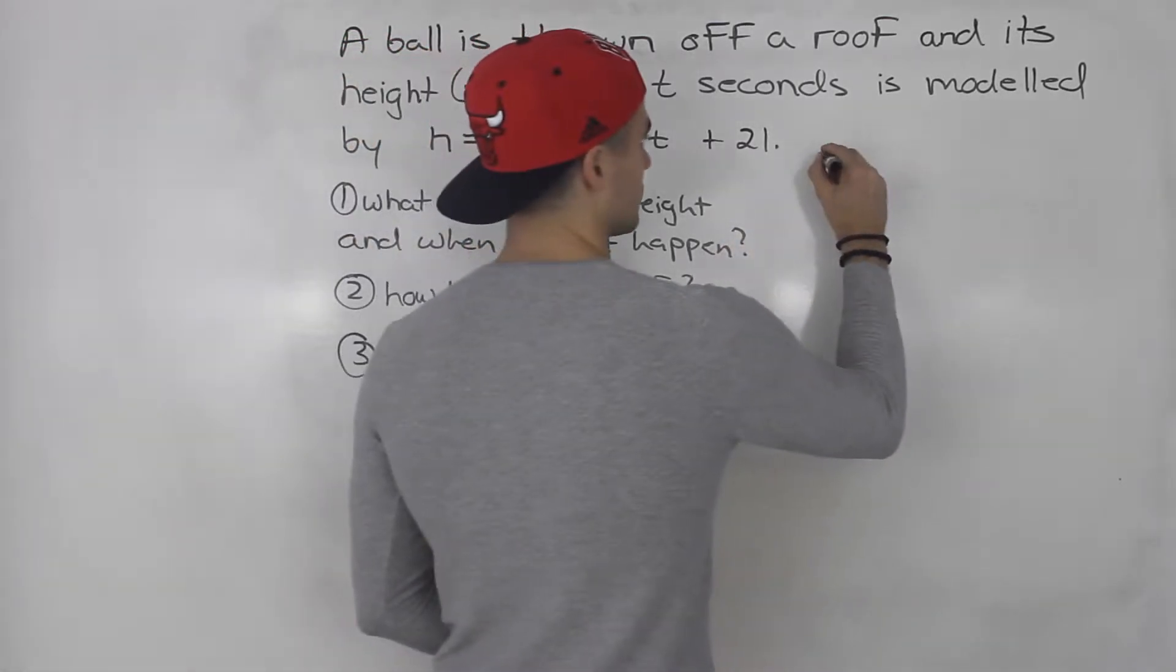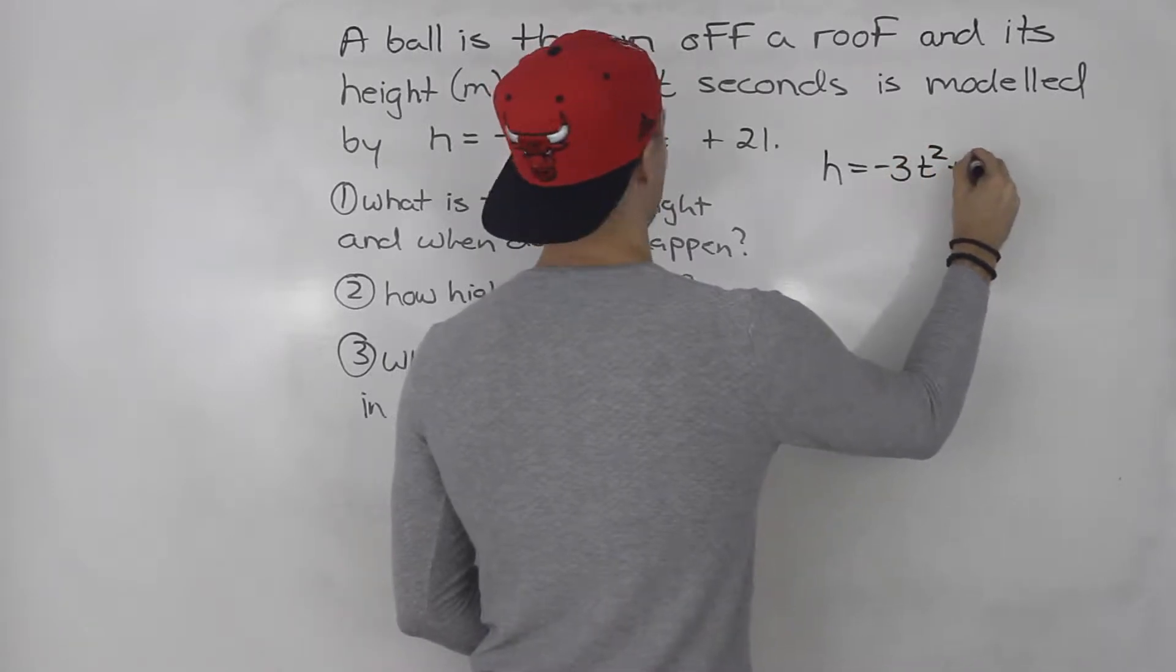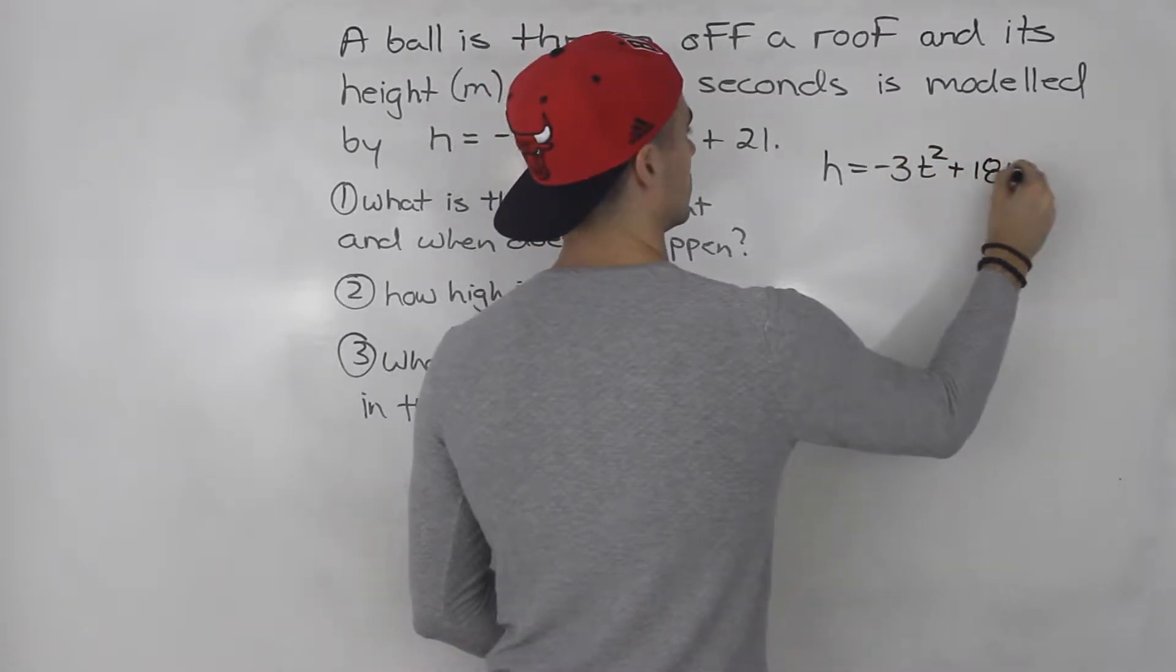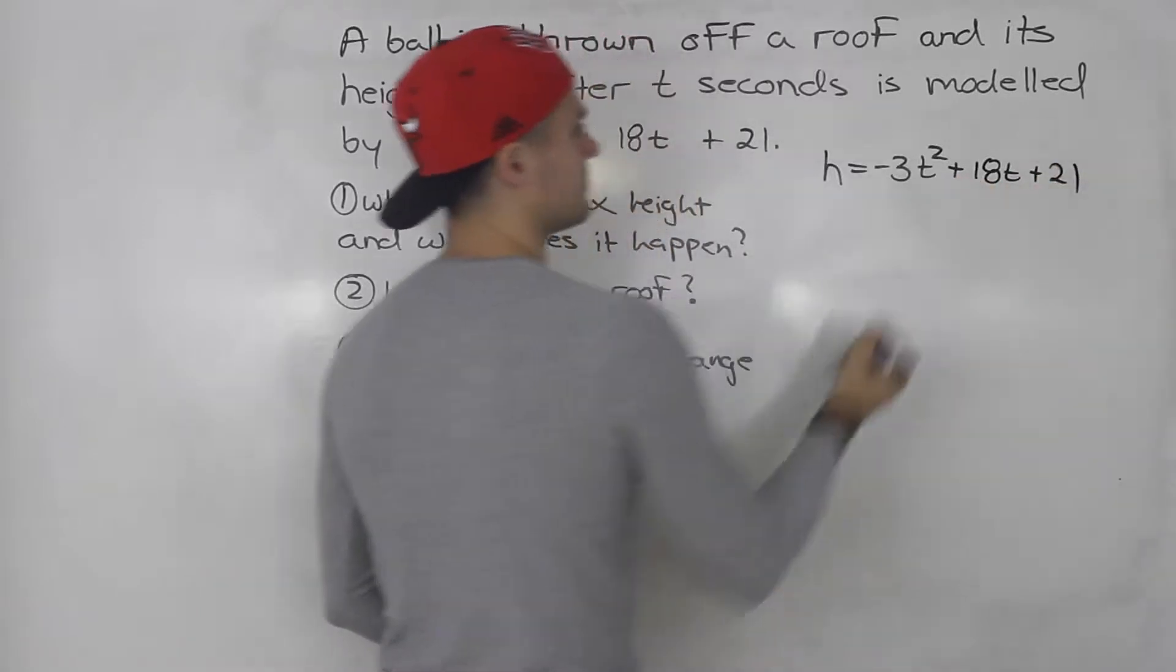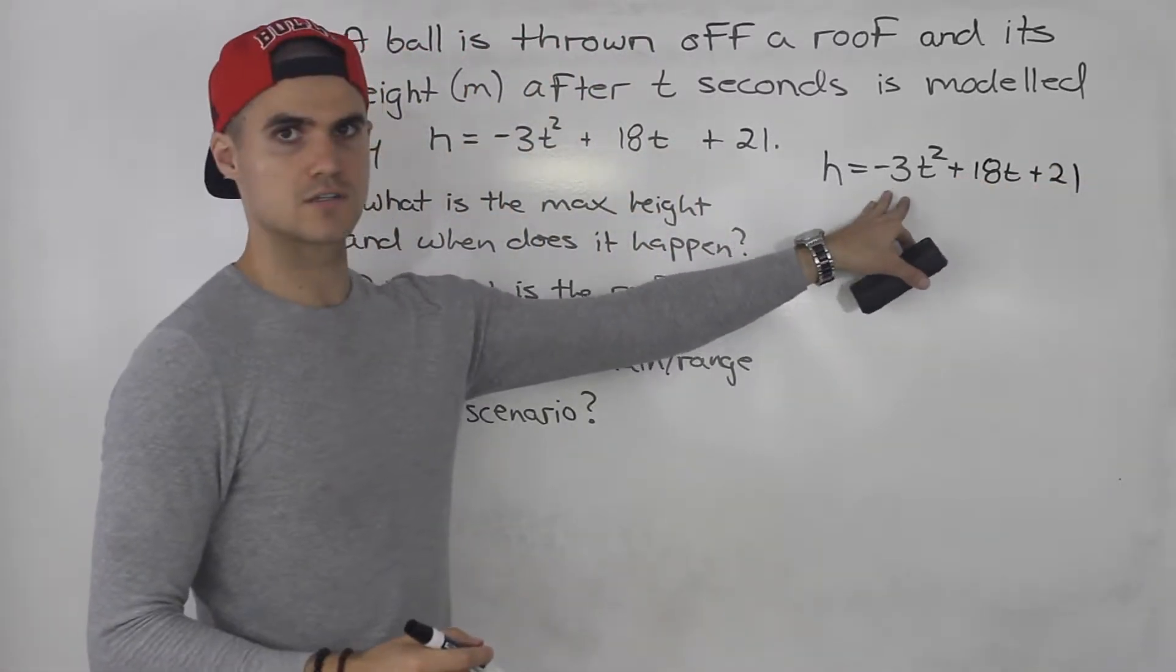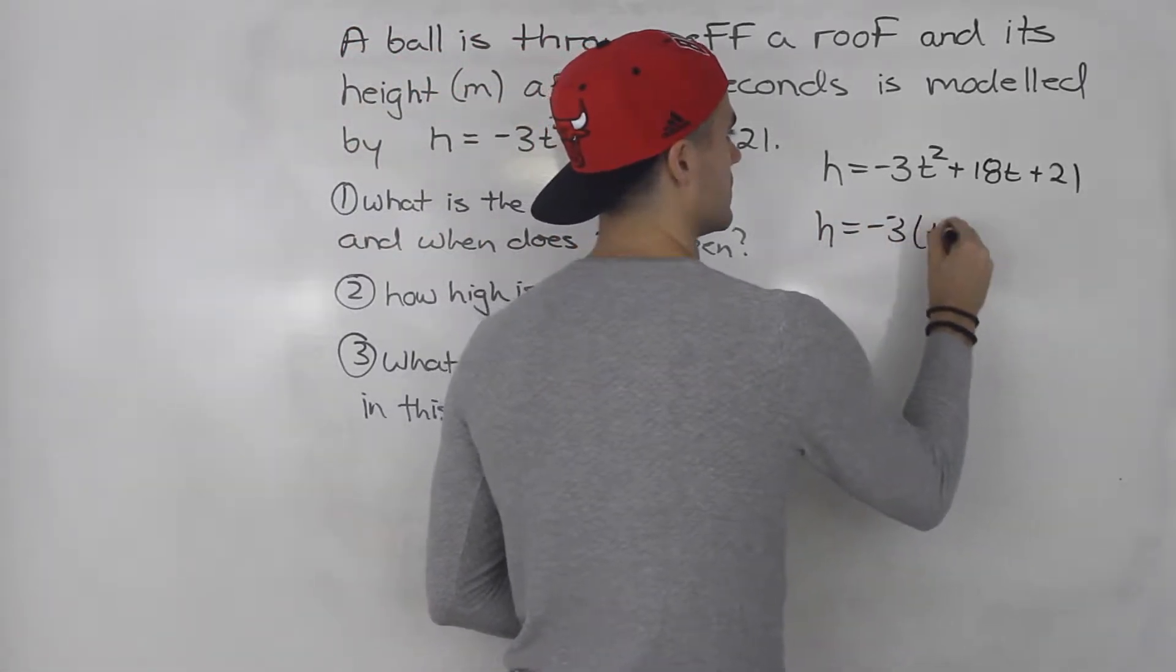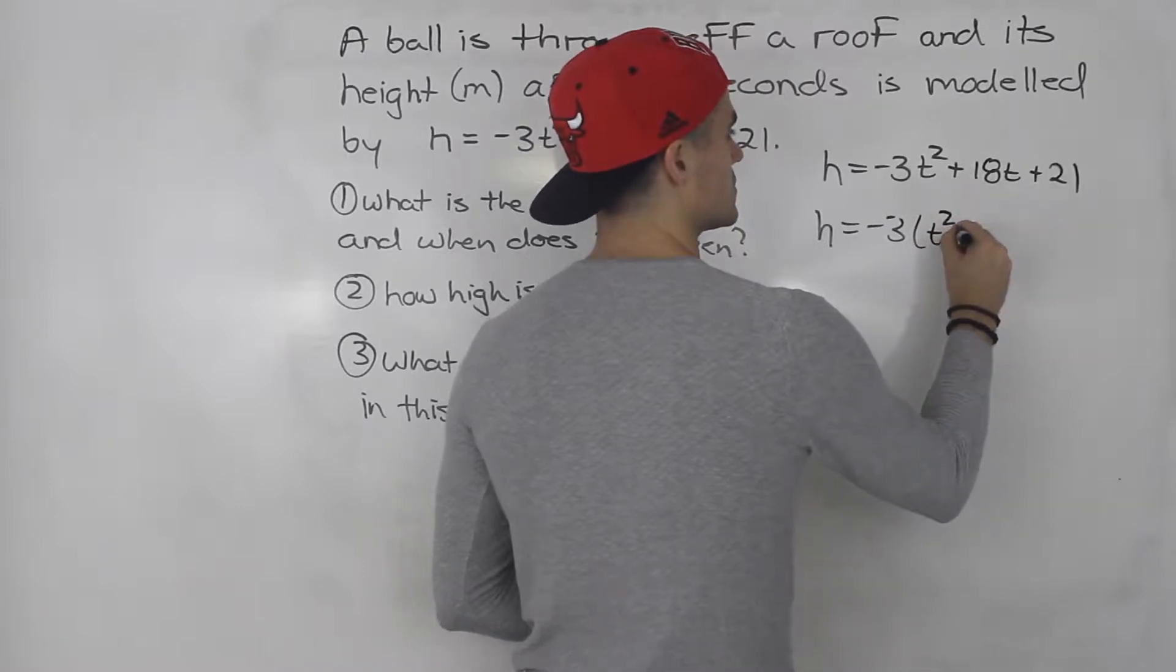We have this function here of the height modeled with the time. So to find the max height we can just convert this to vertex form. So complete the square. Take out a negative 3 from the first two.